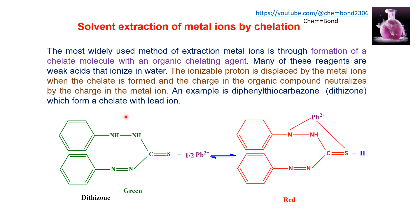The example given is diphenyl dithiocarbosone, also known as dithizone. It forms a chelate with the lead ion, has a green color, and has an ionizable proton. When these ionizable protons are replaced by the metal ion, the negative charge produced on the chelate is balanced by the lead ion, producing a neutral chelate that can be easily extracted into the organic phase.